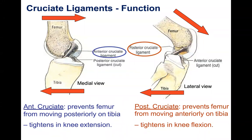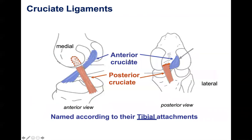The anterior cruciate ligament arises from the posterior lateral aspect of the distal femur and moves anteriorly to attach to the anterior part of the tibial plateau. It gets its name according to its tibial attachment — anterior cruciate ligament because it attaches to the anterior part of the tibia.